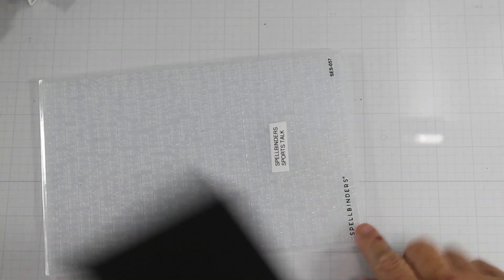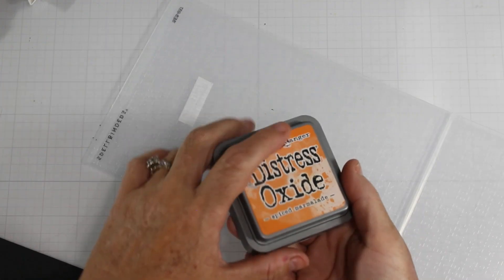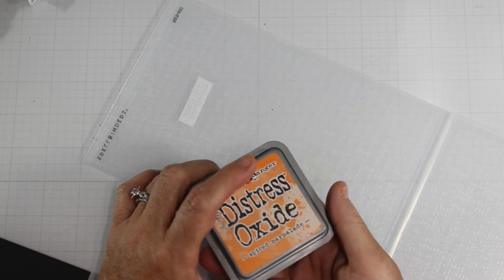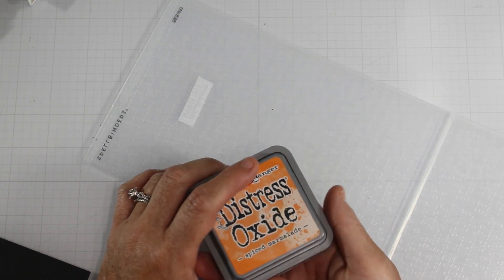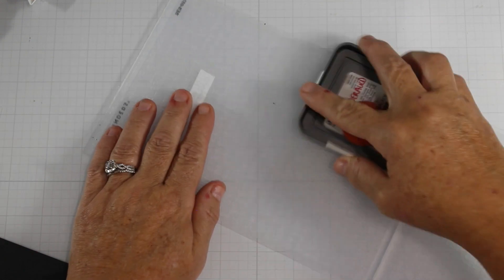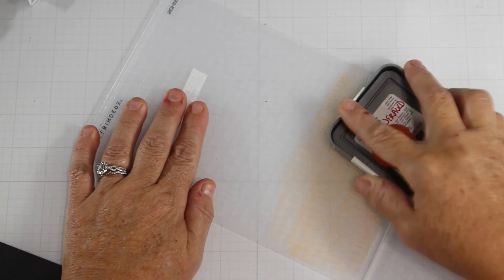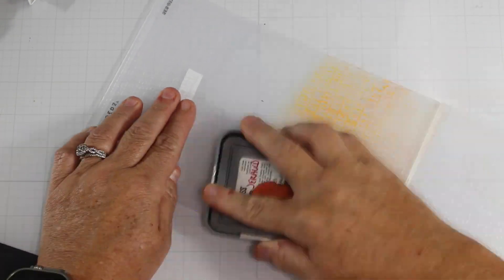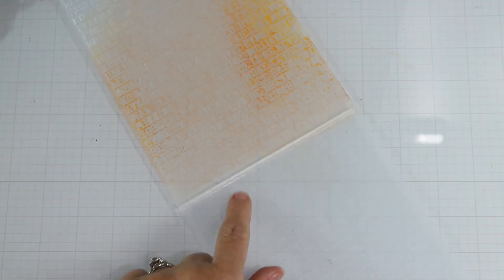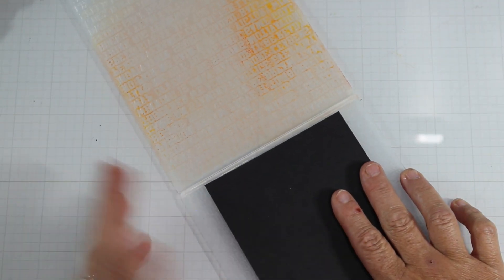And then off camera, I added some gems. I'm using the same Sports Talk embossing folder, but I'm using my Spiced Marmalade Distress Oxide. And I'm using my Oxide because it's a hybrid ink and it's chalky. So by taking the portion of the folder where the printing is, like on the front,